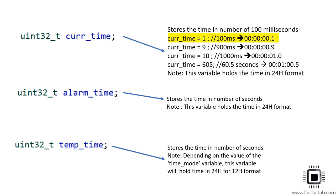For example, if current_time equals 1, that means 100 milliseconds has elapsed — the display would show hours 0, minutes 0, seconds 0, and the sub-second field will show 1, signifying 100 milliseconds. If current_time equals 9, that means 900 milliseconds, so the display shows 9 in the sub-second field. If current_time equals 10, that means 1 second — sub-second field shows 0 and the second field shows 1.